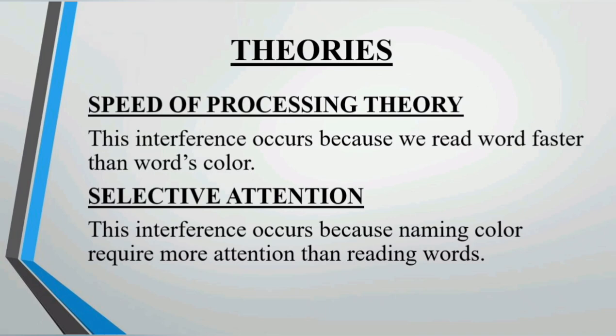Now, these two theories John has given on the basis of interference. The first theory is the speed of processing. This is our reading speed. The word reading speed is faster as compared to the color of word reading.